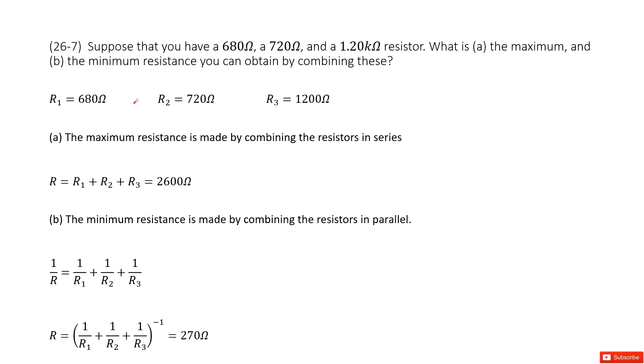So in this one, very straightforward, we can do the series connection for the three resistances. So the equivalent resistance, the maximum resistance is R1 plus R2 plus R3. The final answer is 2,600 ohms.